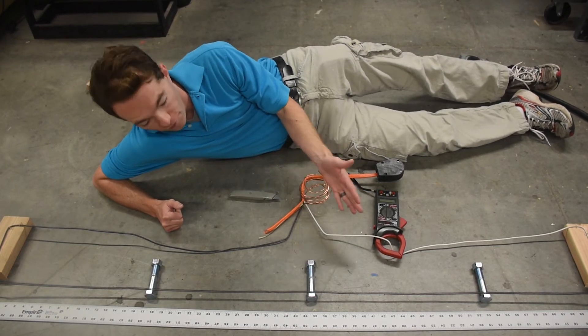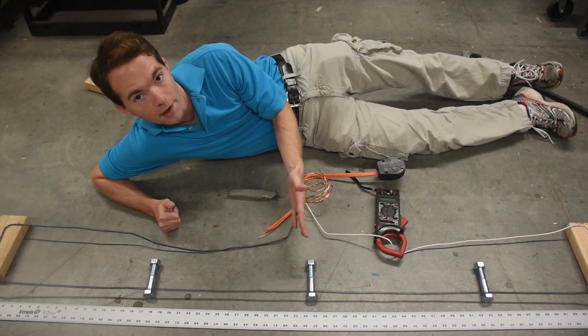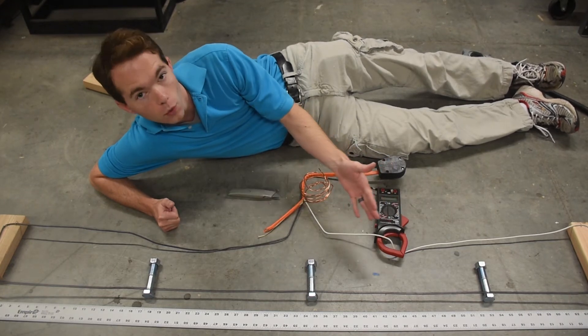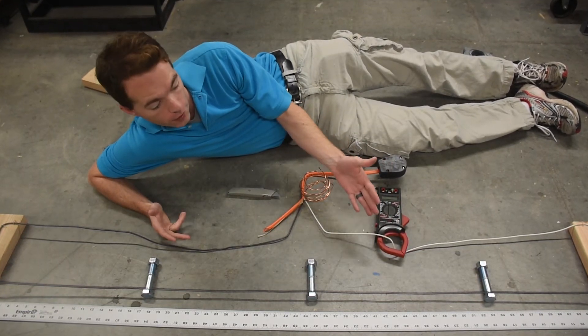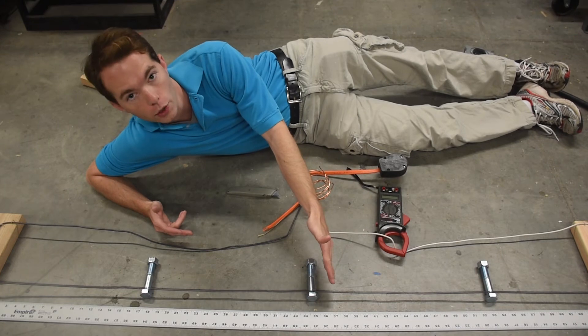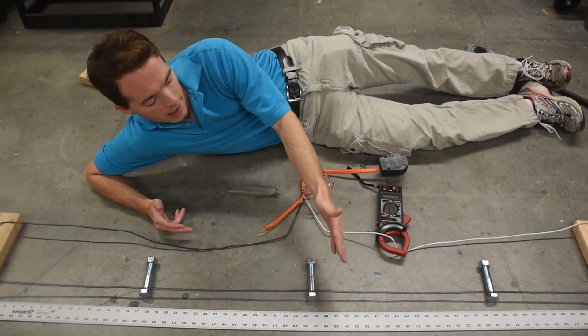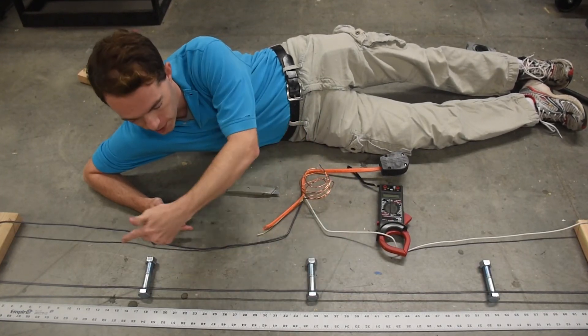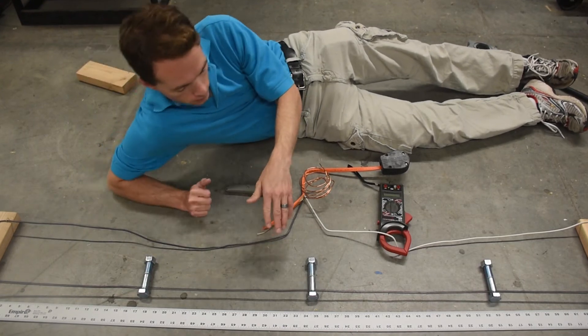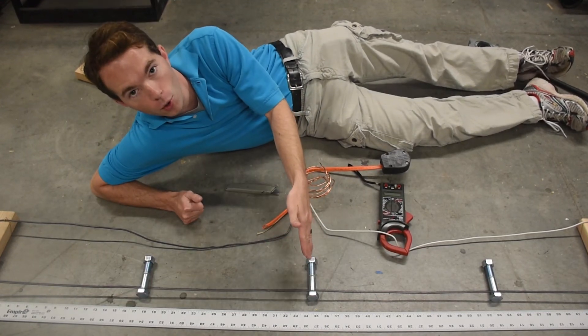So if I want to basically double my current to get the full capacity of this wire, I need to cut my resistance in half, and the way to do that, of course, is to only use half the wire. And then what I'm going to end up having to do is run several wires in parallel, probably linked by a steel bar and a bolt or something on each end.